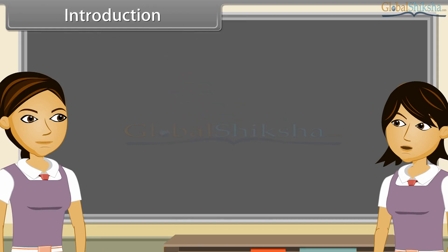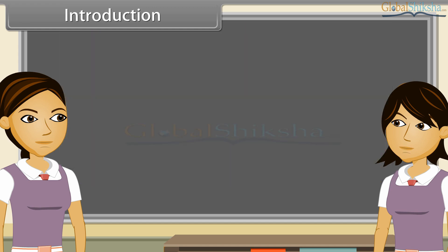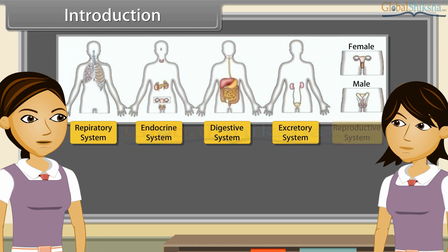The body of higher animals like man is formed of a number of organ systems. Some examples are digestive system, respiratory system, circulatory system, excretory system, etc.